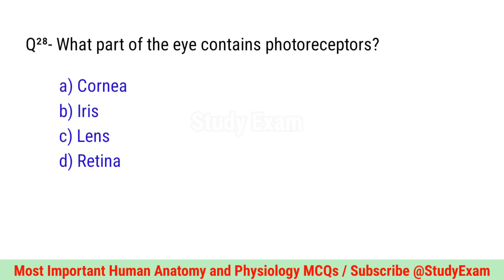Question number twenty-eight. What part of the eye contains photoreceptors? Correct option is D. Retina.